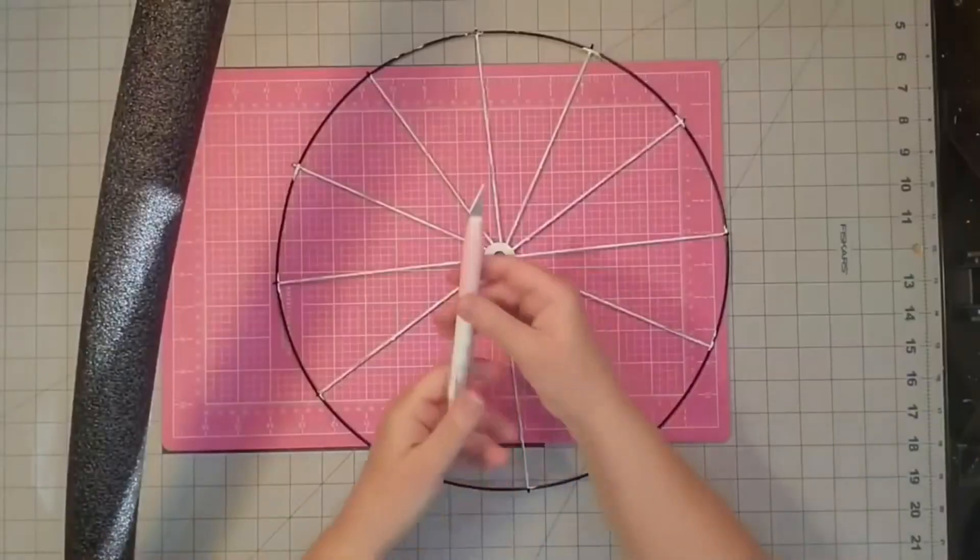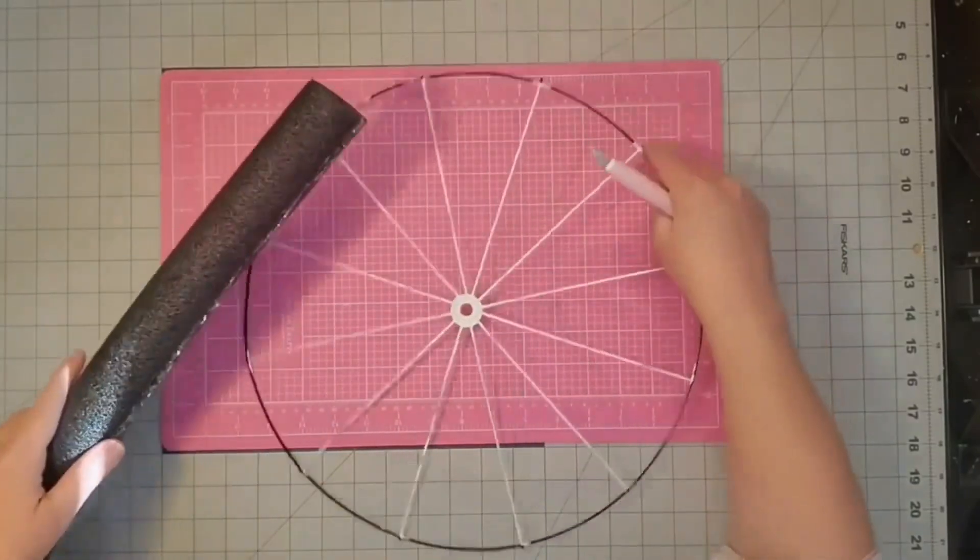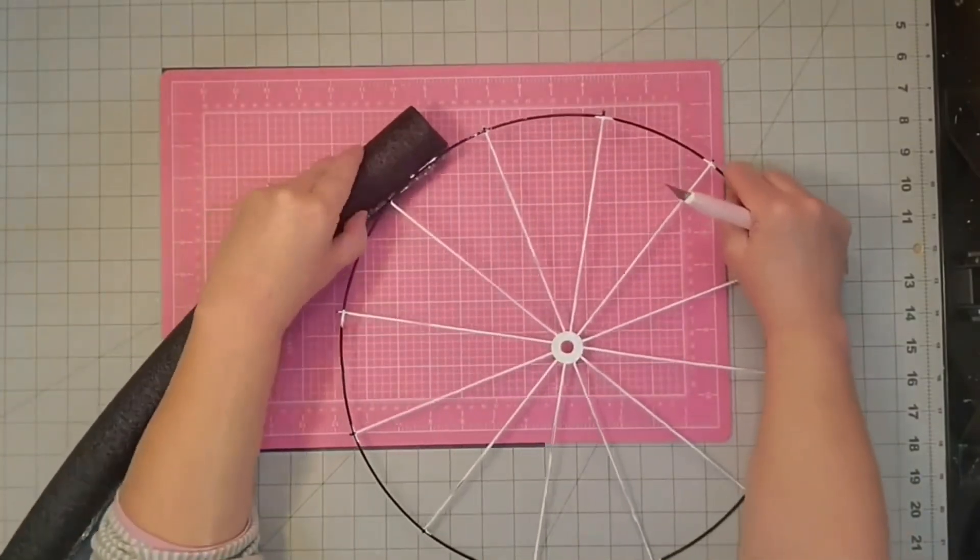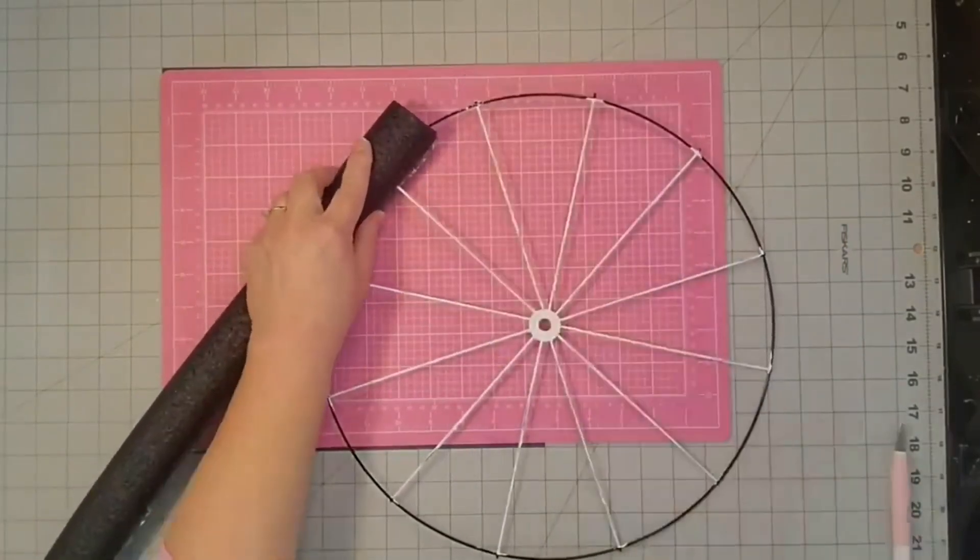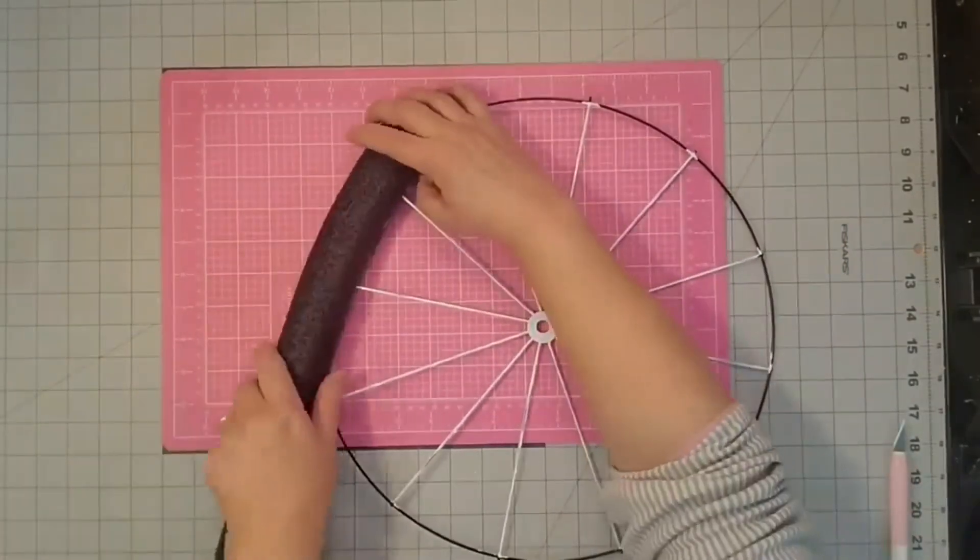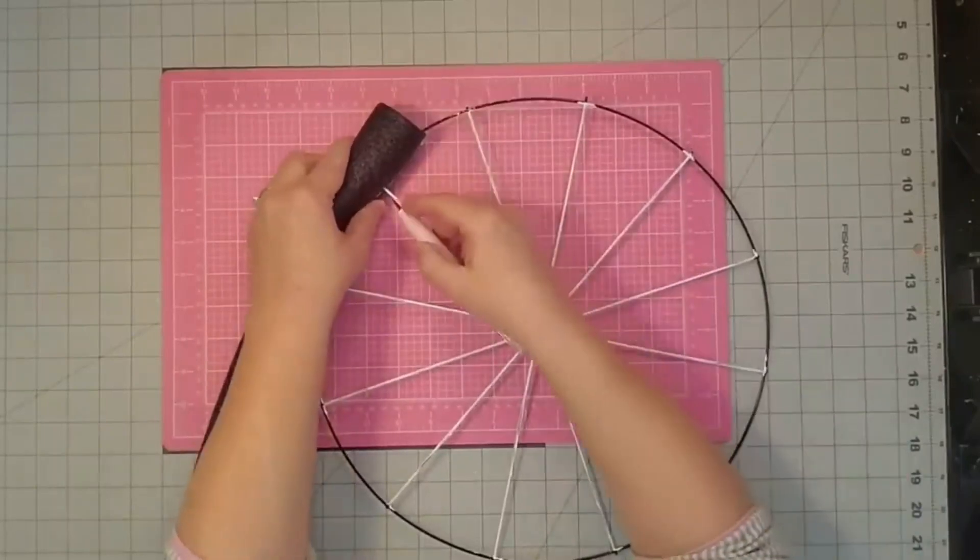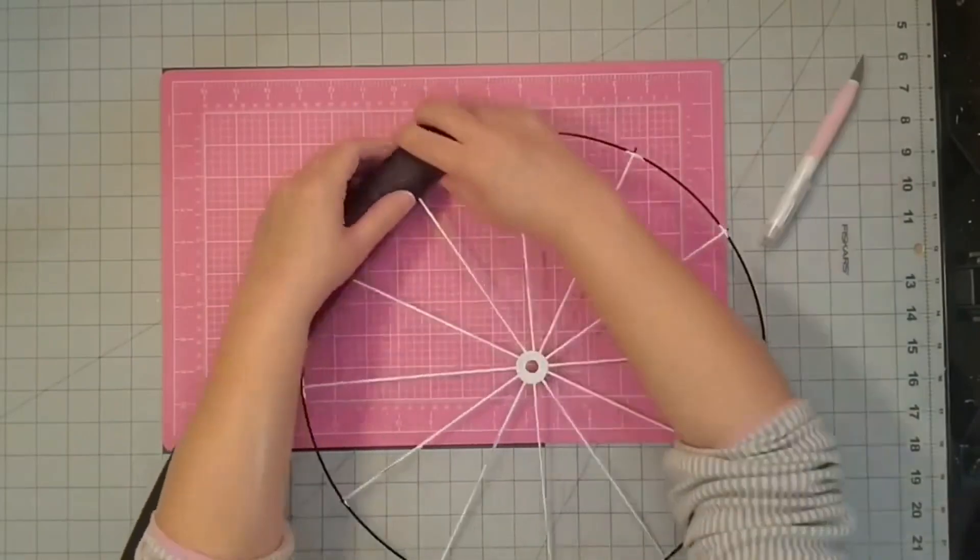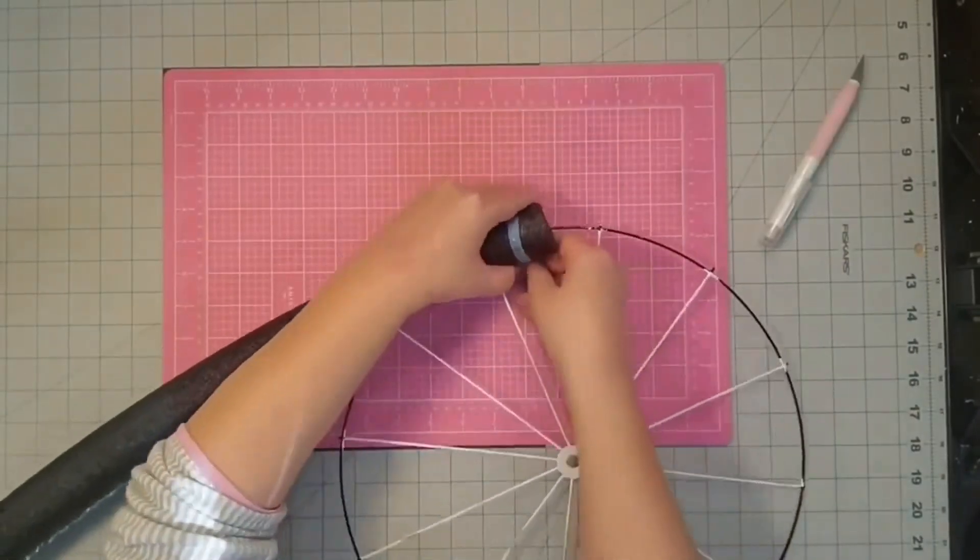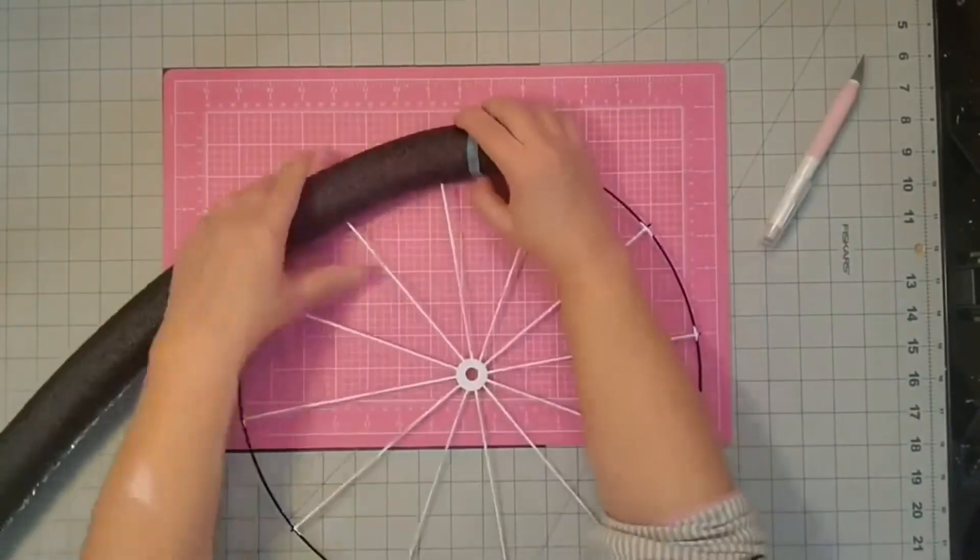I'm going to take my utility knife and start working my way around the wreath form and place down this foam insulation. I'm going to cut slits into the foam insulation everywhere we meet a spoke on the wheel. That way I can slide the insulation more towards the back of the frame and when I connect it you won't notice it on the front of the wreath.